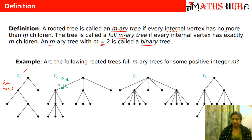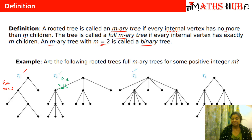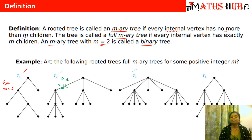Now let's talk about T3. In T3 you can see that the root vertex has 5 children. This vertex also has 5 children, and this vertex also has 5 children. So here either the vertices have 0 children or they have 5 children. So this is again a full 5-ary tree.